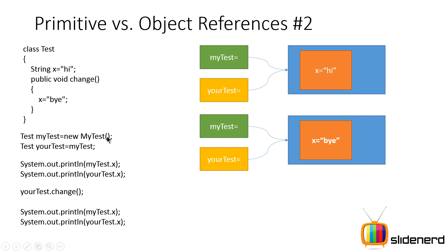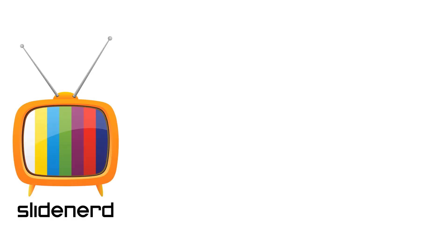So changing one will affect the other — but for primitive types, that is not the case. In the next video we'll take a simple example and understand this at a practical level in NetBeans. If you liked what you saw, please like this video, share it, subscribe to our channel, and let us know your thoughts in the comments below. Have a nice day — thanks for watching, I'll catch you guys in the next video.